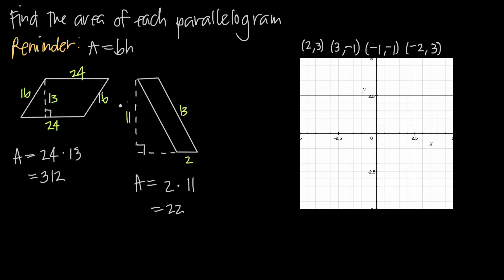If you're ever struggling with which height to pick, just look at which height is associated with the slant — that's not the one you want. The one you want is the other height. In this case it's illustrated outside the parallelogram, but it's the vertical height from the top to the bottom. Sometimes it'll be illustrated outside, sometimes inside, depending on how much the parallelogram slants. The height we're looking for here is 11.